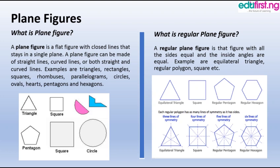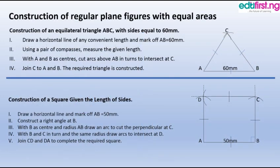With this understanding, we now ask: what is a regular plane figure? A regular plane figure is a figure with all sides equal and all inside angles equal. Examples are equilateral triangle, regular polygon, and square, as you can see in the diagram. Let's move on to the next subtopic: construction of regular plane figures with equal areas.